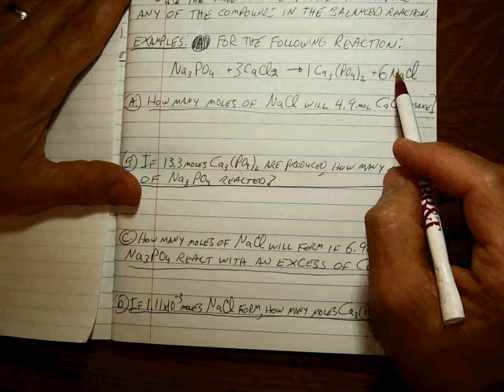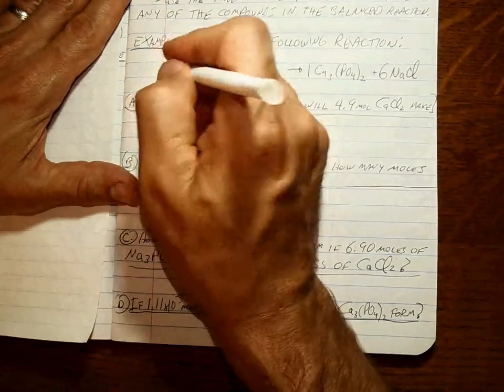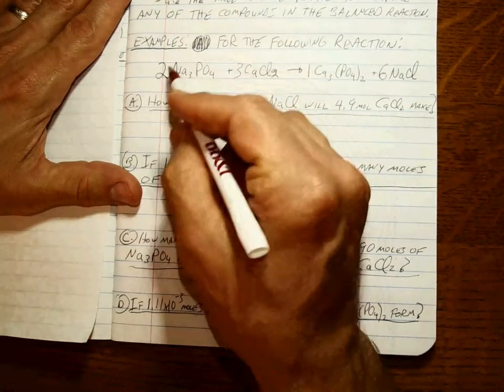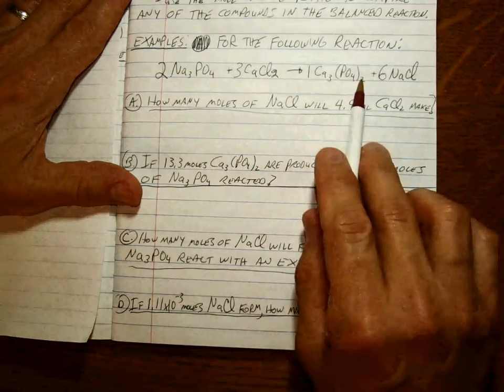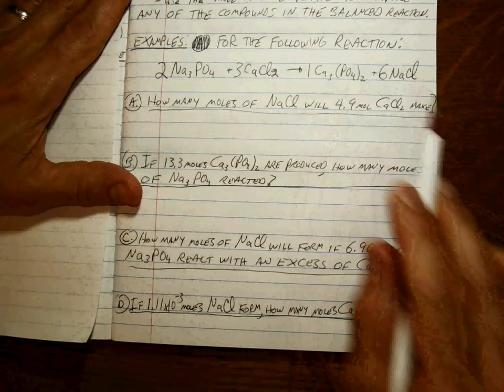And if there are six of these, that means six sodiums, and the only way that will balance is if there's two of these to make six sodiums. And if that's right, you should have two phosphates. You have two phosphates, and we're balanced. Didn't take much time.